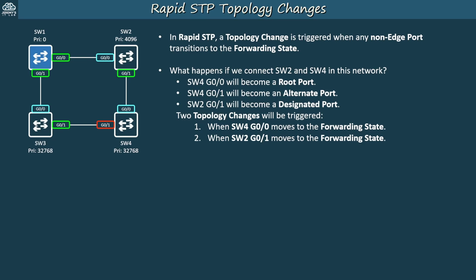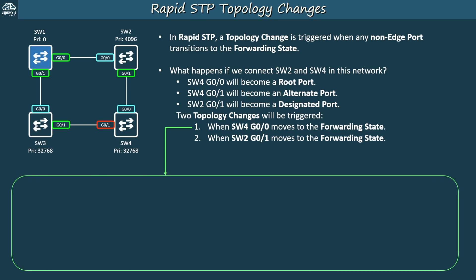What actually happens when a topology change is triggered in Rapid STP? Let's use the example of a topology change on SW4 to demonstrate. First, SW4 immediately flushes all MAC address table entries learned on non-edge ports. In classic STP, the MAC aging time is reduced to 15 seconds, but that's not fast enough for Rapid STP. Rapid STP ports can immediately move to forwarding, so switches need to immediately clear the MAC address table and relearn MAC addresses according to the new topology.